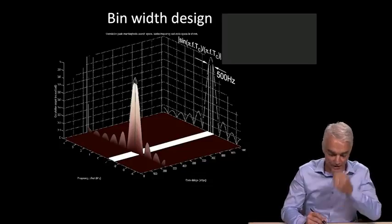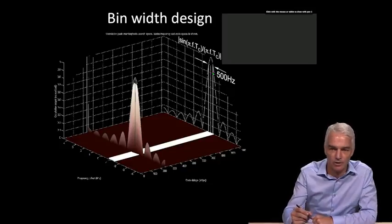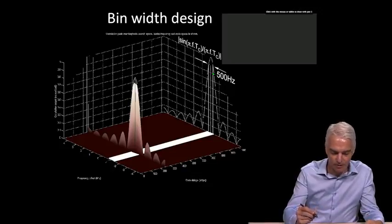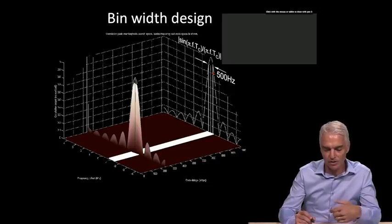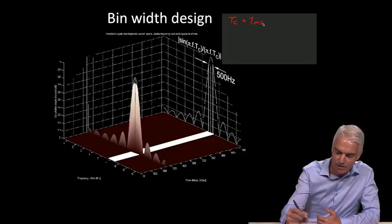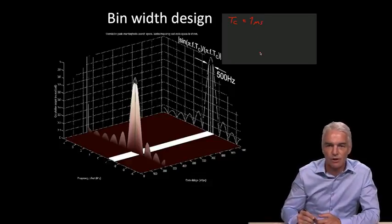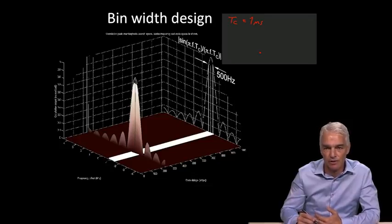In this gray box here, we'll start with the equation. We've got that sinc function. Let's fix a coherent interval of one millisecond. That's a standard GPS coherent interval because the PRN code is one millisecond long. You have to integrate for at least one millisecond to get the proper autocorrelation function of the PRN code. That's a very typical value.